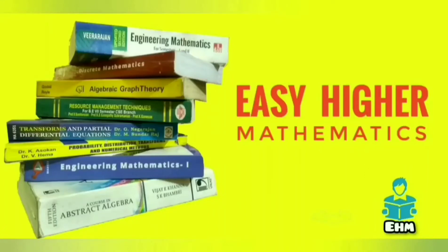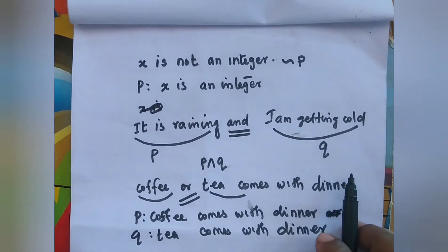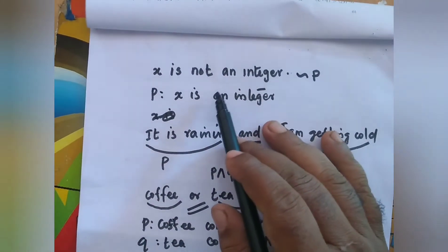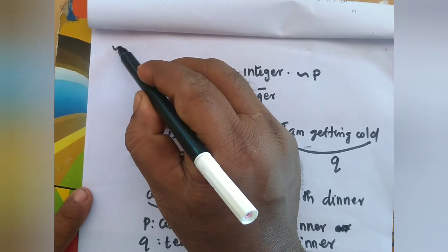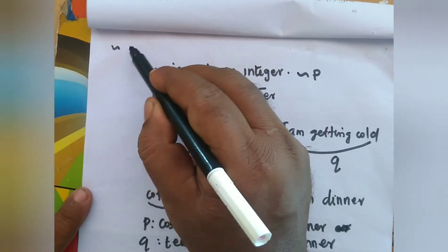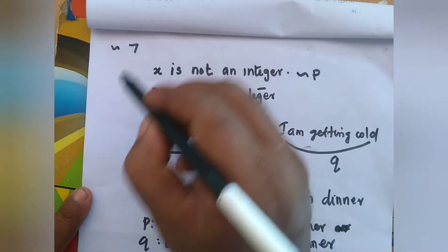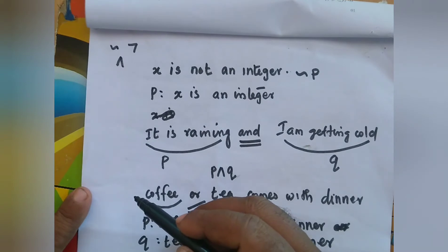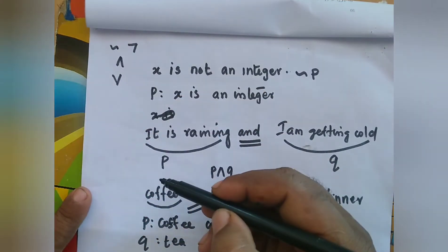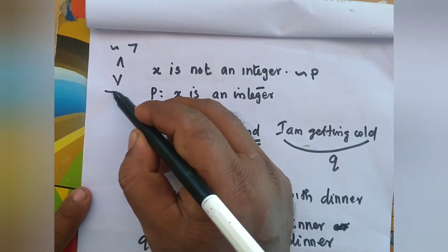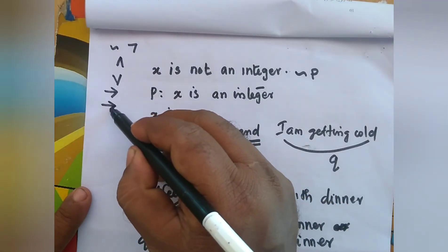Welcome to easy higher mathematics: mathematical logic. The first topic is symbolic form. For symbolic form, we mainly use four or five logical apparatus. The first one is negation — the notation uses a special symbol. The second one is 'and', that is conjunction. The third one is 'or'. The next one is the 'if' conditional, and the last one is the biconditional, or 'if and only if'.